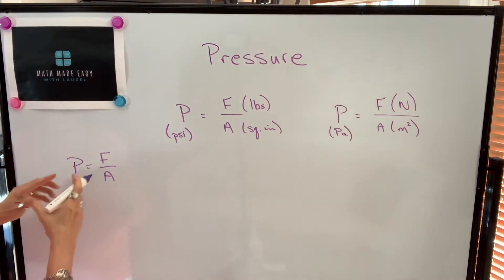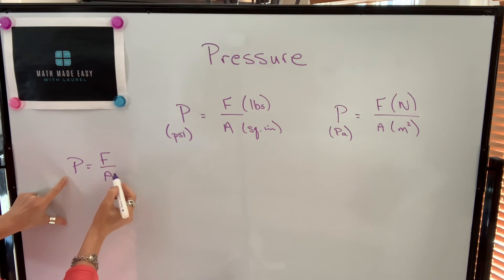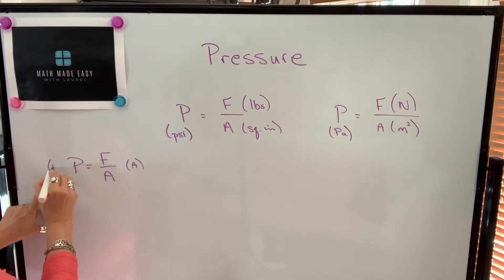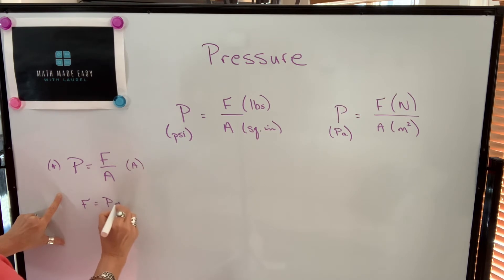So if we wanted to solve for force, the way that we isolate force is we multiply both sides by area. So if I multiply this side by area and this side by area, I would get force equals pressure times area.